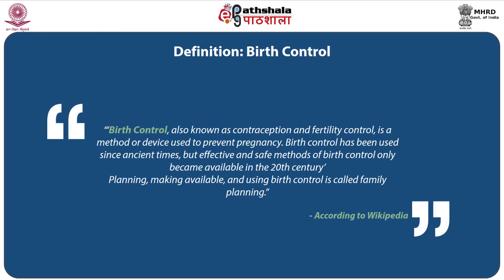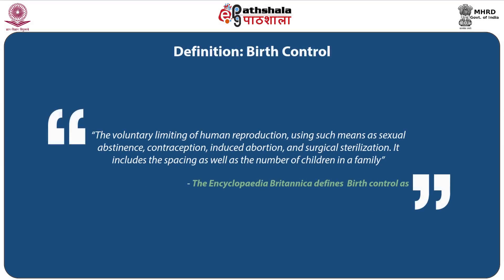According to Wikipedia, birth control, also known as contraception and fertility control, is a method or device used to prevent pregnancy. Birth control has been used since ancient times, but effective and safe methods only became available in the 20th century. Planning, making available, and using birth control is called family planning. The Encyclopedia Britannica defines birth control as the voluntary limiting of human reproduction using such means as sexual abstinence, contraception, induced abortion, and surgical sterilization. It includes the spacing as well as the number of children in a family.